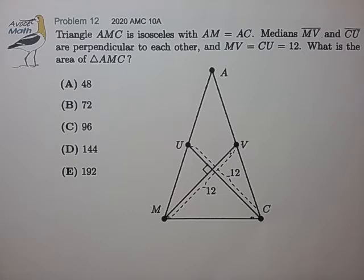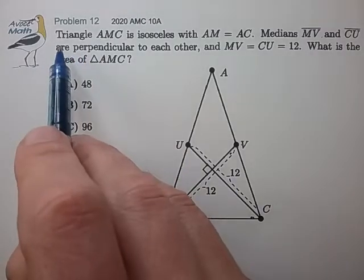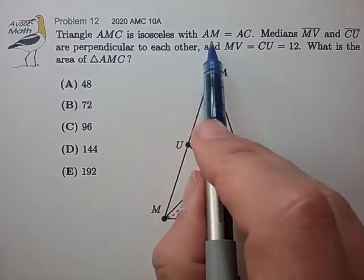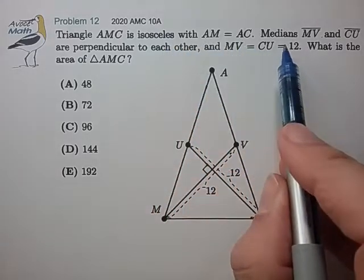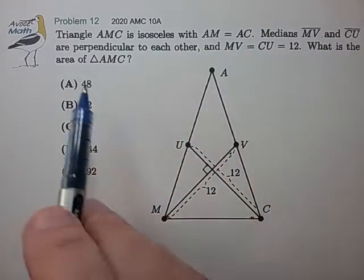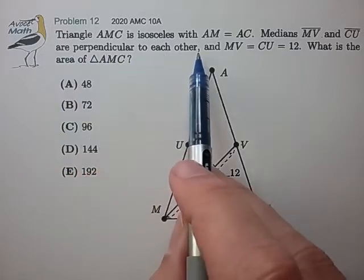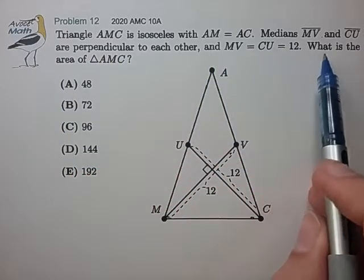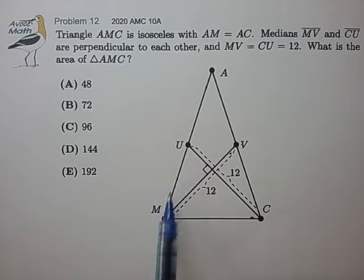Hi, this is problem 12 from the 2020 AMC 10A. Triangle AMC is isosceles with AM equal to AC, and medians MV and CU are perpendicular to each other and both have length 12. What is the area of AMC?